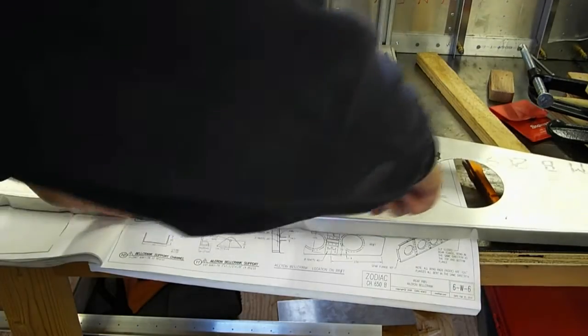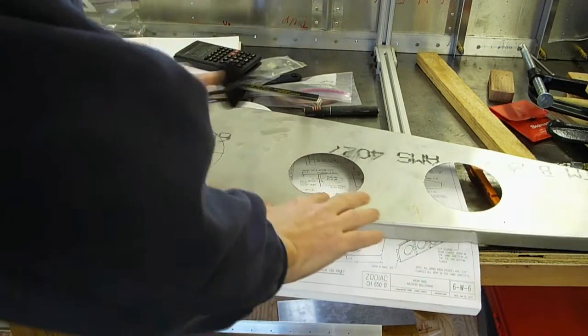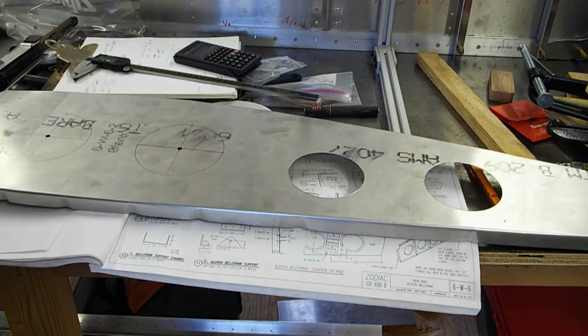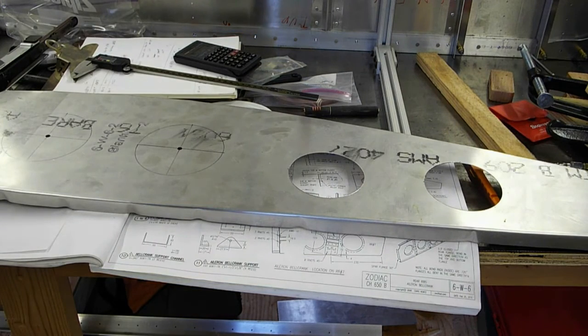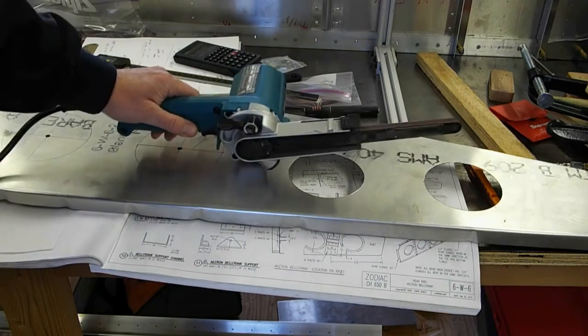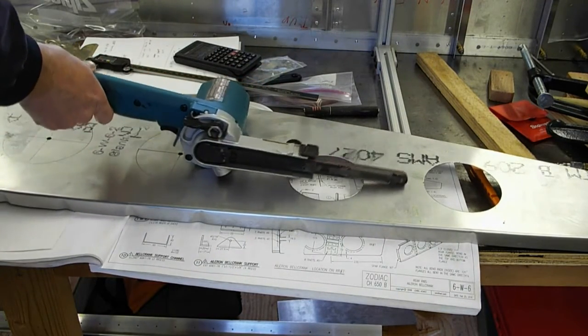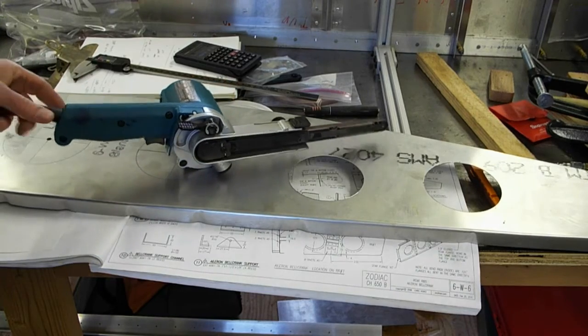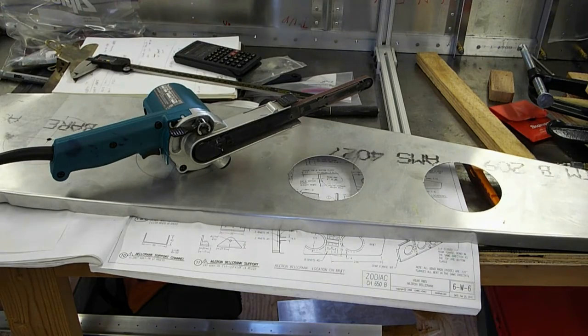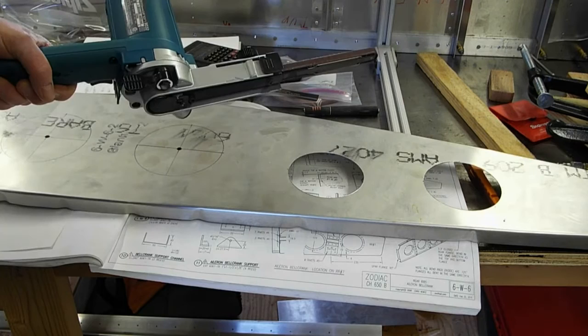One other tool I thought I would just mention real quick that I've used recently is basically, I guess you could call it a thin sander. I think I've seen it referenced as a file sander. This one is one made by Makita. And essentially, it's got a 3 1/8 inch wide belt on it.